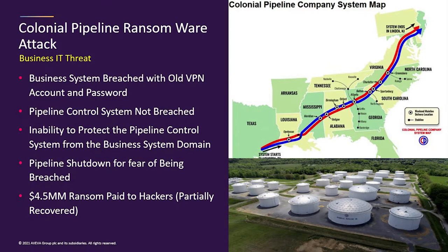And then of course we all remember the Colonial Pipeline incident. This is the business IT threat. The business system was breached with an old VPN and password. The pipeline control system was never breached in this event. But because they didn't have the ability to disconnect themselves from the business system, they had to shut the whole thing down. They paid the ransom and the FBI got part of it back. We're so vulnerable now that when we don't know what to do, we just shut everything down.